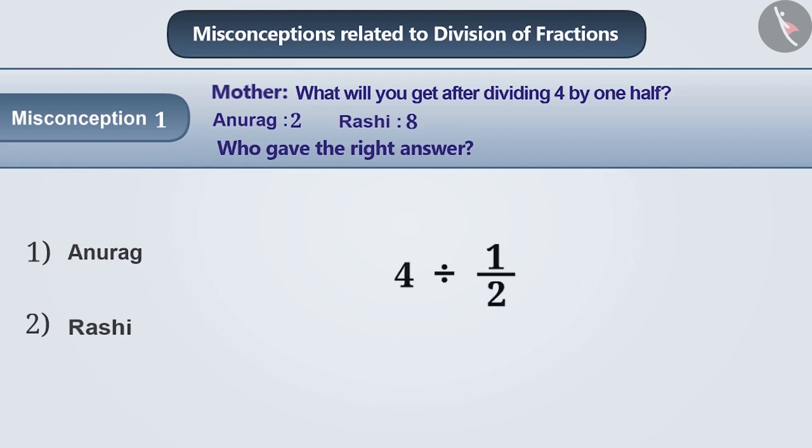Many times, children understand that division by one half means making the number half. Because of this, Anurag said that the result of 4 divided by half is 2. This is wrong.